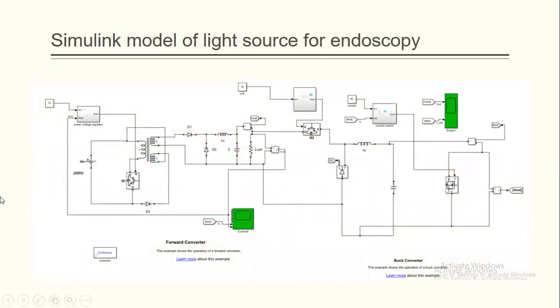Simulink model right here. It's combining both the forward converter and the buck converter. So, right here we have a 100 watt output from the forward converter into the buck converter. It's 8.3 amperes and 12 volt output feeding the buck converter.